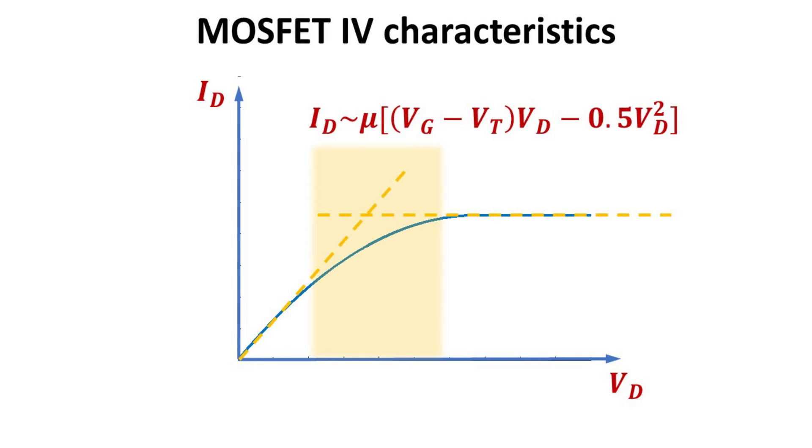At intermediate Vd, the ID can be described as follows, and this is known as the triode regime. Here, Vt is the threshold voltage of the MOSFET.